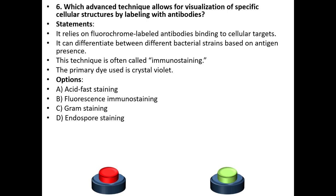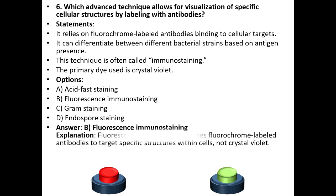Options: A. Acid-fast staining. B. Fluorescence immunostaining. C. Gram staining. D. Endospore staining. The answer is B, fluorescence immunostaining. Explanation: Fluorescence immunostaining uses fluorochrome-labelled antibodies to target specific structures within cells. Note: the primary dye is not crystal violet.